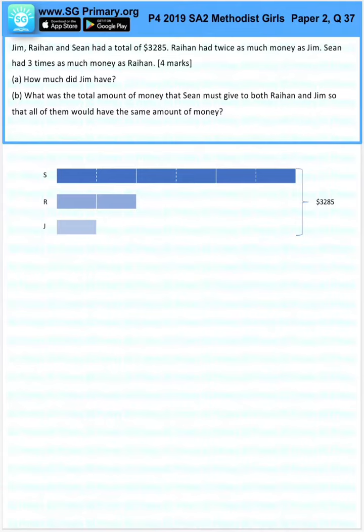Now we see here that Raihan has two times of Jim, and then now we see that Sean has three times of Raihan. So 1, 2, 3.